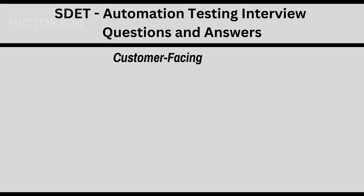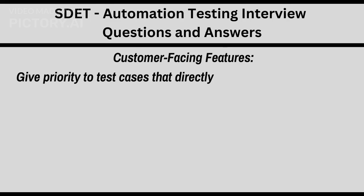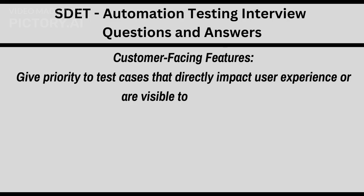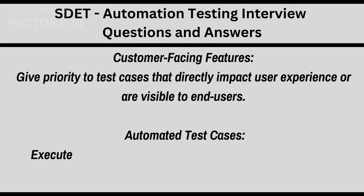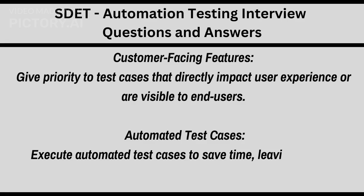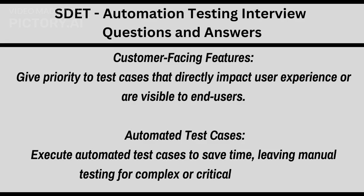Customer facing features: give priority to test cases that directly impact user experience or are visible to end users. Automated test cases: execute automated test cases to save time, leaving manual testing for complex or critical scenarios.